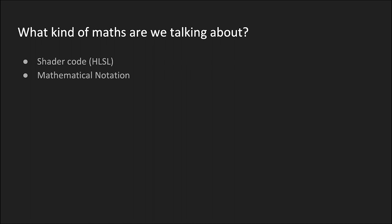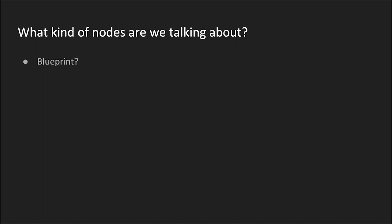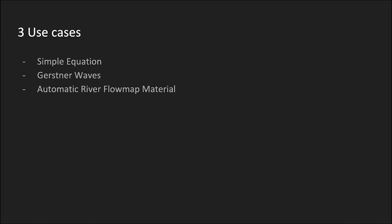So what do we mean by maths? We have two forms we're covering: one is shader code — function notation with flow control, for-loops, and that kind of thing. The other is mathematical notation, which may be a bit more abstract and harder to decode. When I say nodes, there are different node systems — we have Blueprint, but we're mainly looking at material nodes that run on the GPU as vertex and pixel shaders.